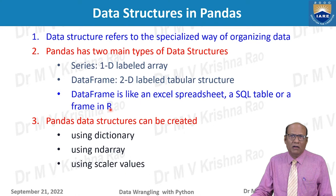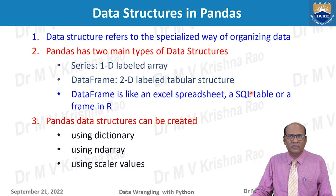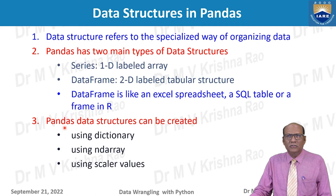The DataFrame always has labels — labels for rows and labels for columns. Pandas data structures can be created using a dictionary, an n-dimensional array where all data types in the array are the same, or from scalar values. In a dictionary, it has keys and corresponding values — a single value or a list of values. From scalar values, you can fill a constant throughout a structure.